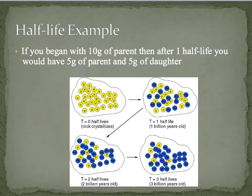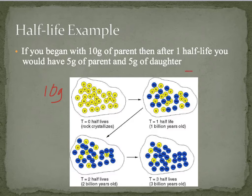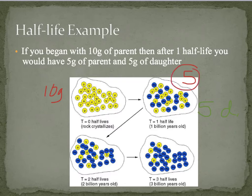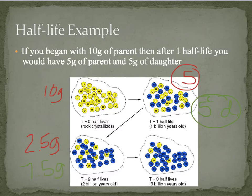Let's work through an example. In this rock, there are 10 grams of parent isotope initially. Once it goes through one half-life, we will have 5 grams of the original parent and 5 grams of the daughter, or decay product. Going through another half-life, we cut the parent in half again — now we have 2.5 grams of parent, and the daughter increases by the same amount, giving us 7.5 grams of daughter.